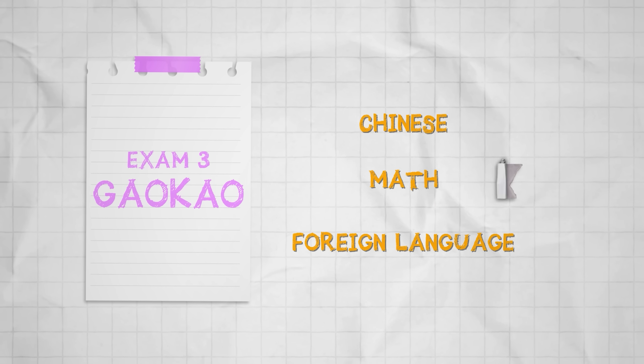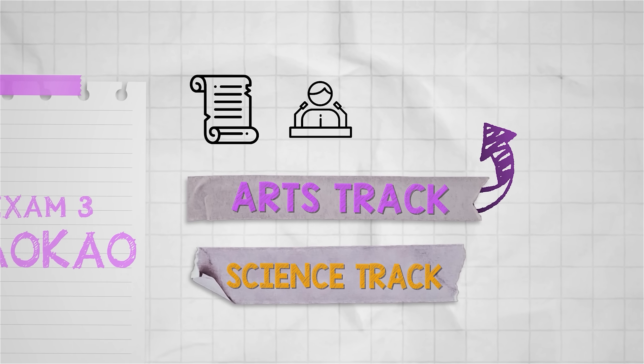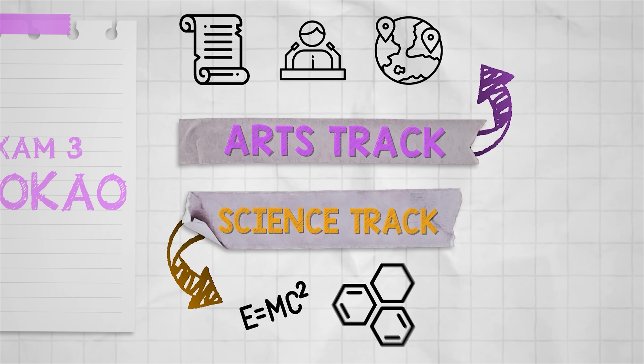And students must choose between the arts track or the science track. The arts track will further test examinees on history, political science, and geography. Whereas the science track will test them on physics, chemistry, and biology.